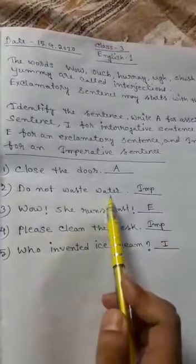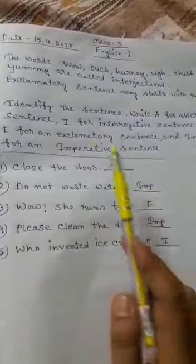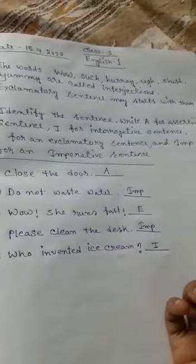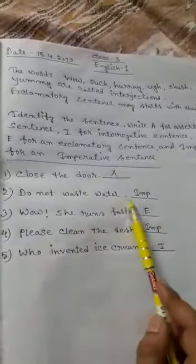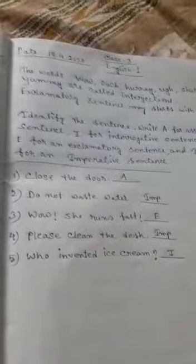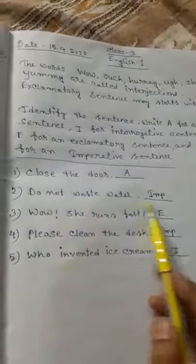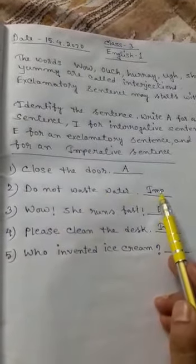You have to say it's an assertive sentence also? No, not assertive. You have to say it's an imperative sentence—an order or a request. So you have to write Imp for imperative sentence.